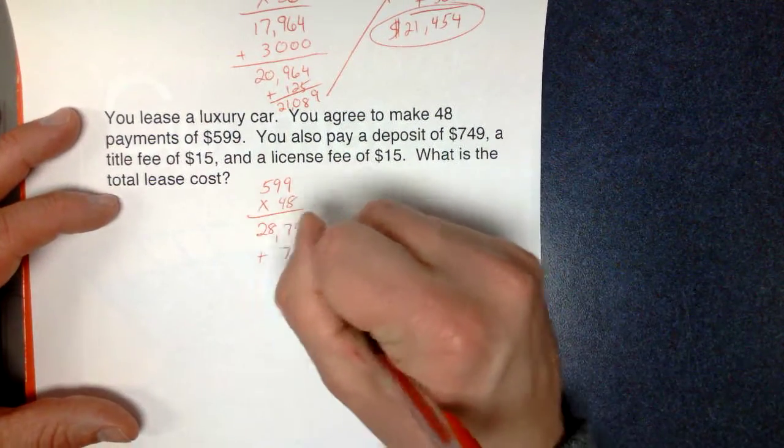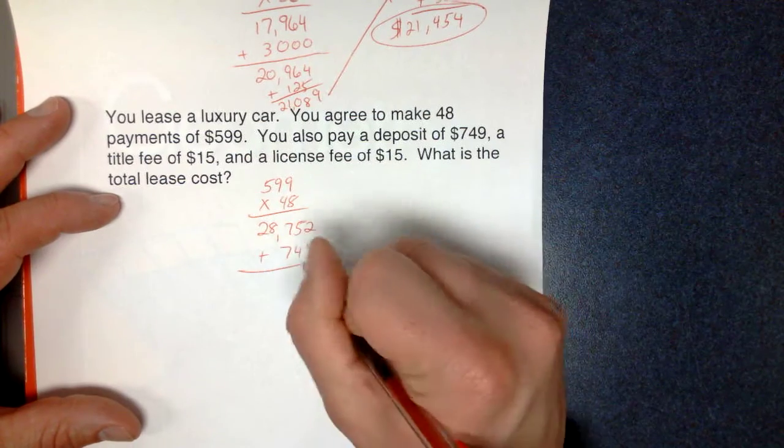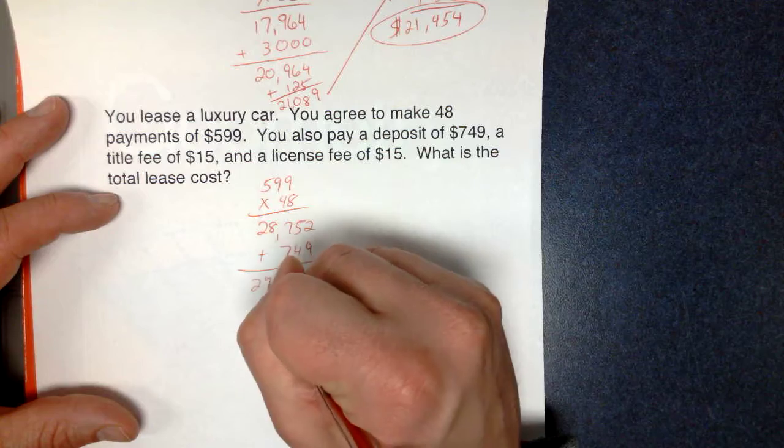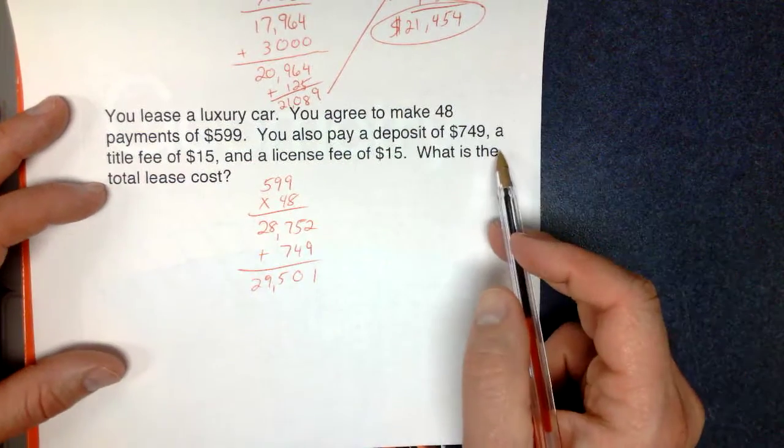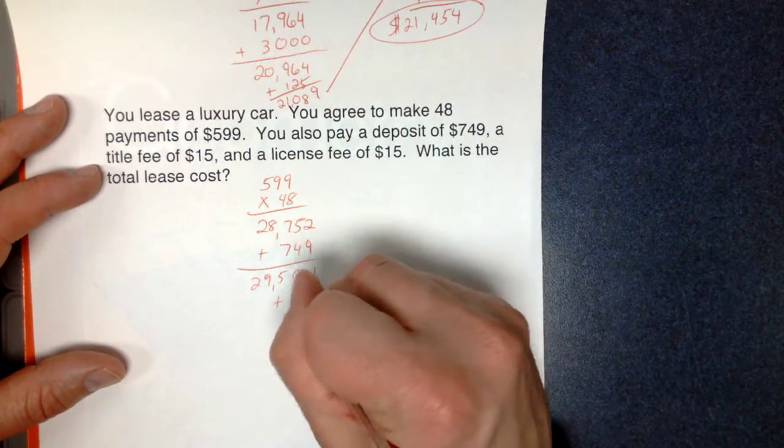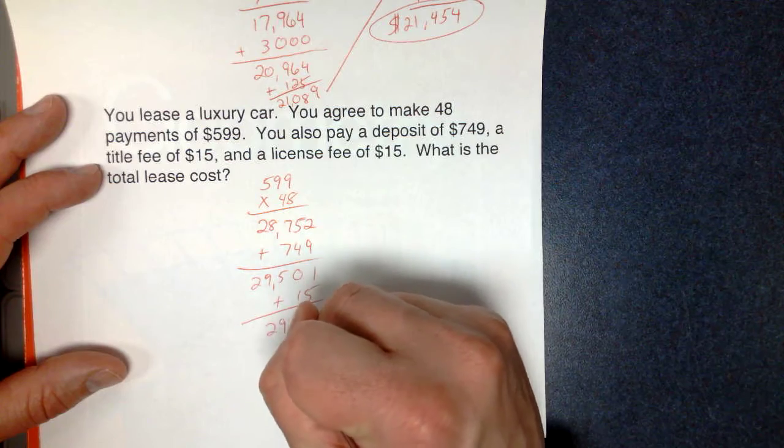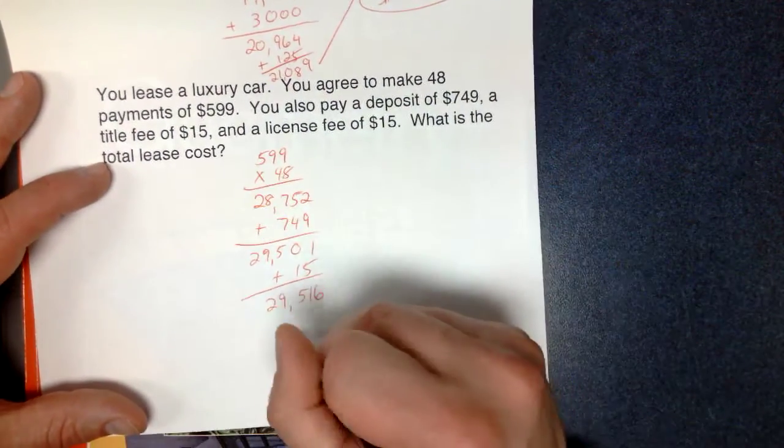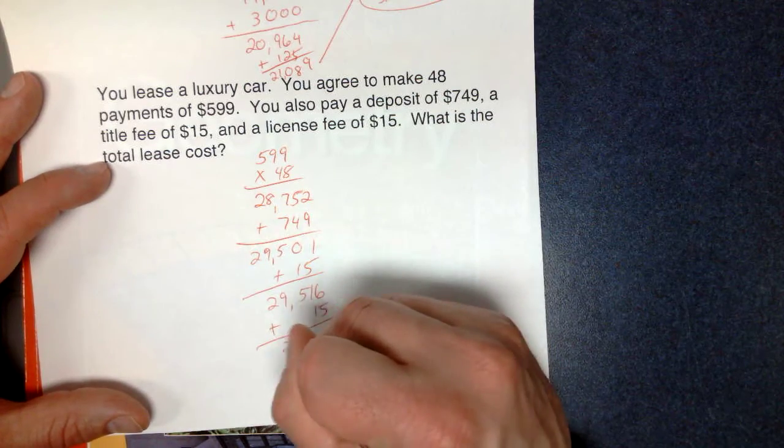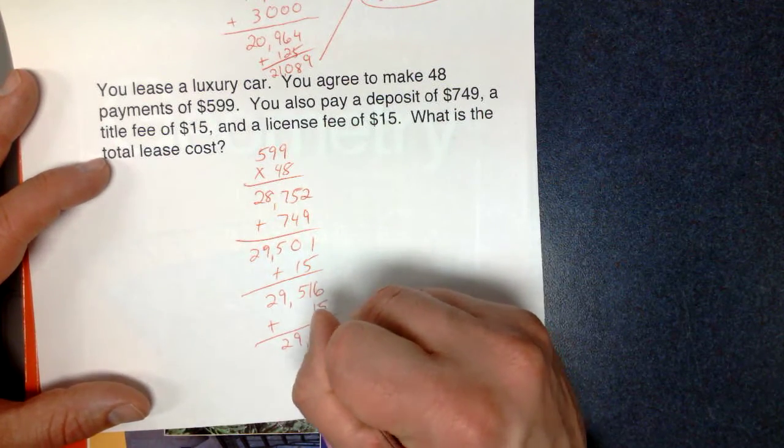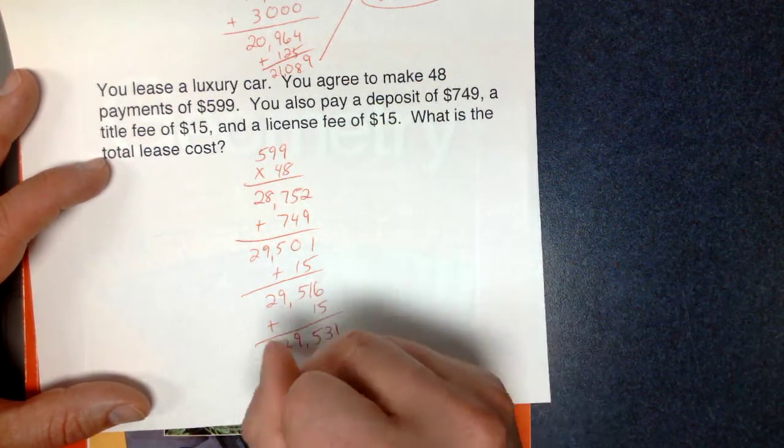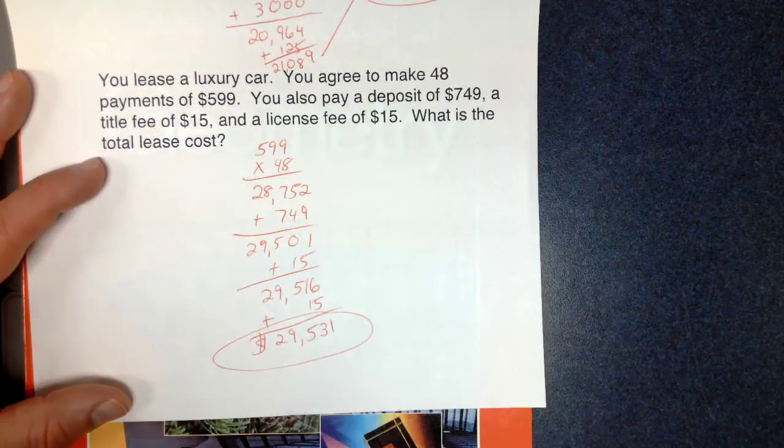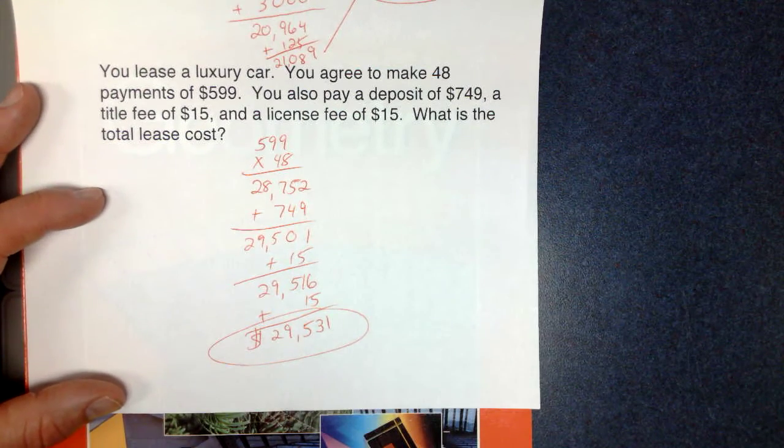We're going to pay a deposit of $749, which is going to get us up to $29,501. Title fee of $15. If you add $15 on there, we're at $29,516. And a license fee of $15 takes us up to $29,531. Total lease cost over the course of those 48 months for this car would be $29,531.